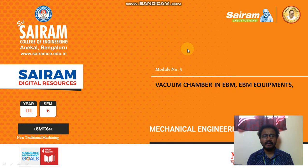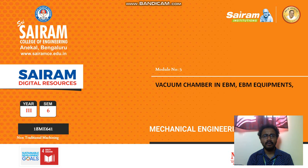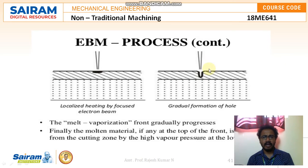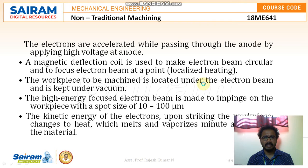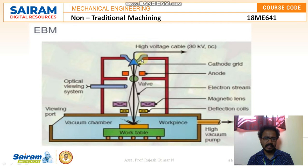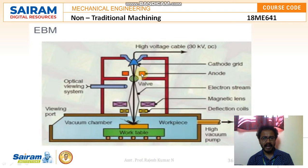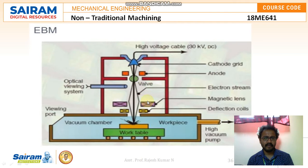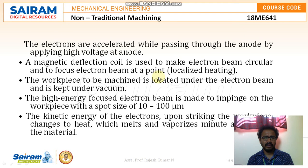Hello everyone. In this video we will be discussing the electron beam machining process continuation. In the previous video we started discussing the major components and briefly discussed the working of the electron beam machining process. Continuing from that, we can see the diagram showing the major components: a tungsten filament from the cathode, a grid, and below that an anode, with a focusing lens, deflection coils, and magnetic lens — all kept inside a vacuum chamber.